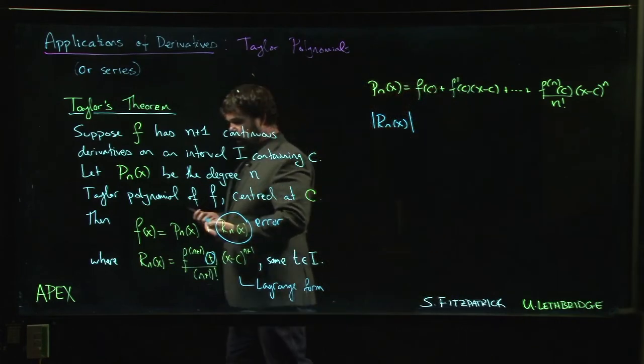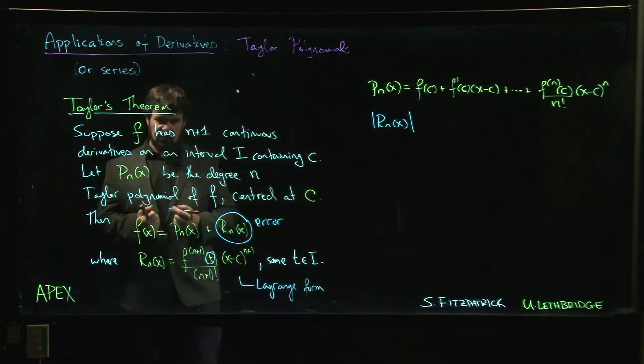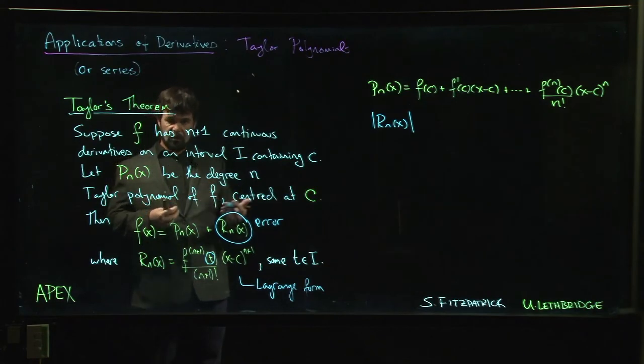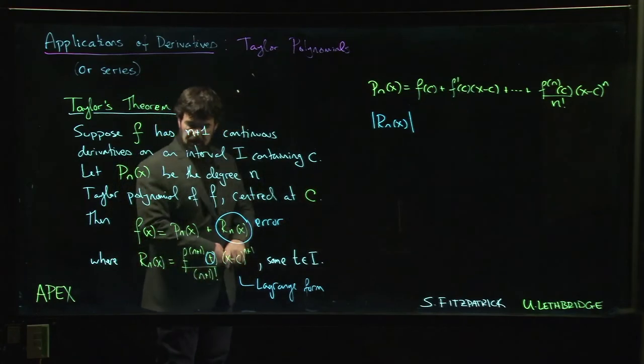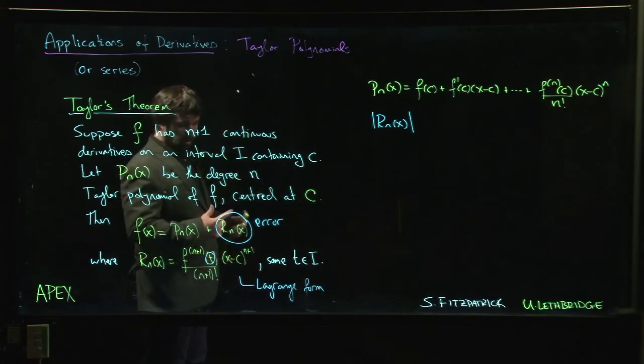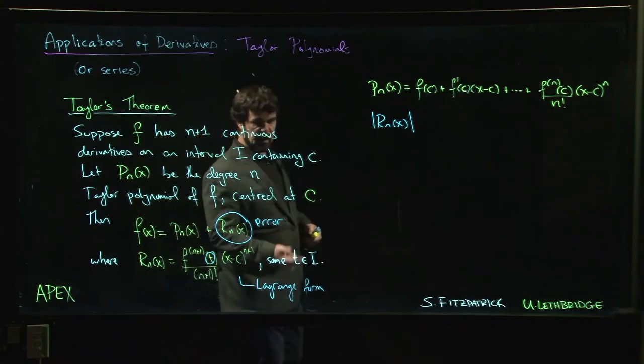This particular remainder is what's called the Lagrange form of the remainder. It's one of actually three different forms that you find for this remainder, three different remainder formulas. The first one is derived using integration arguments and it's quite tricky to get to, but once you have that first one, there are mean value theorem arguments that you can make to arrive at simpler remainder formulas.